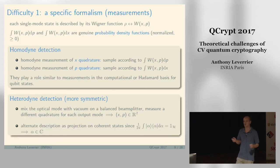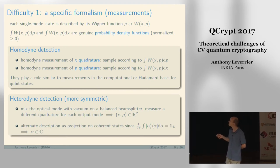These are the states that you use in continuous variable QKD. What are the measurements that you can do? Each single mode state is described by this Wigner function.